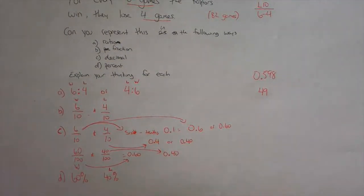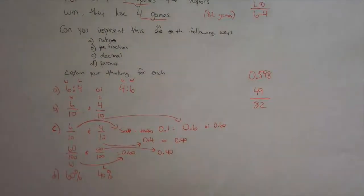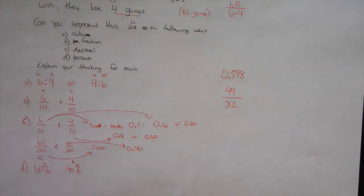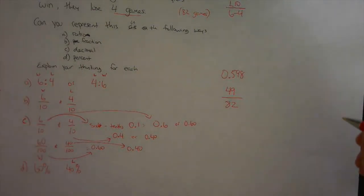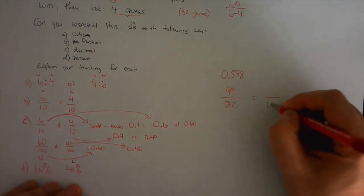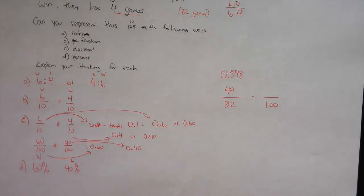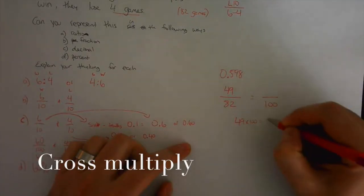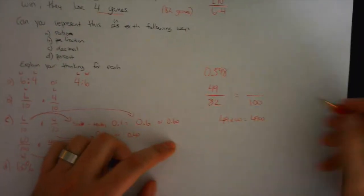So for the Raptors it says zero point five nine eight as your winning percentage. As we saw, the Raptors won forty-nine games and they play a total of eighty-two. Is there any way I can figure out their actual percentage? What strategies would I use now to figure out their actual winning percentage? You're trying to find it out of a hundred, so you guys remember what to do here when it looks like this.